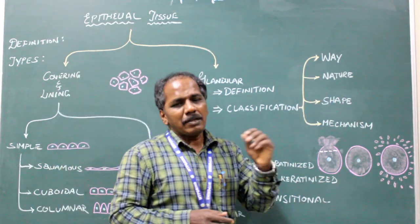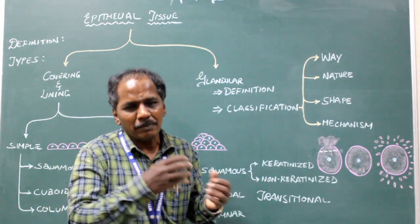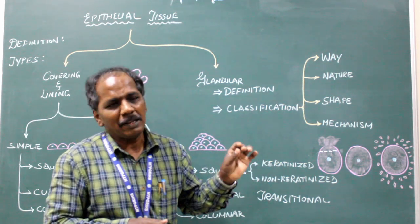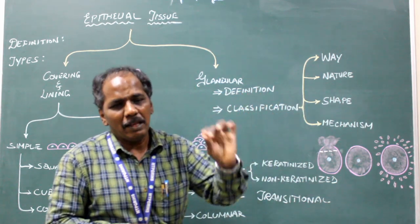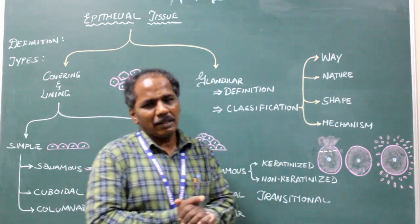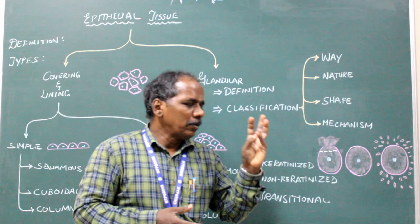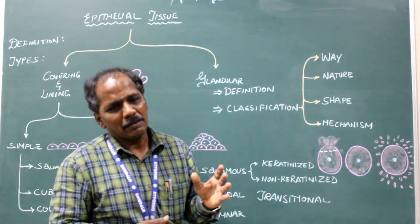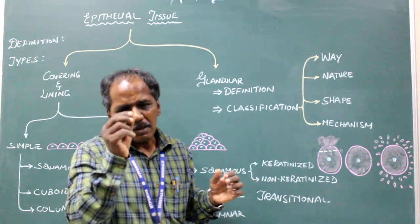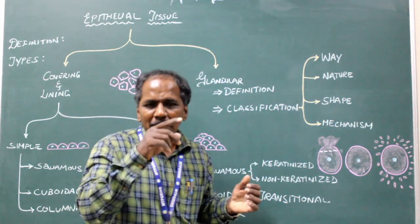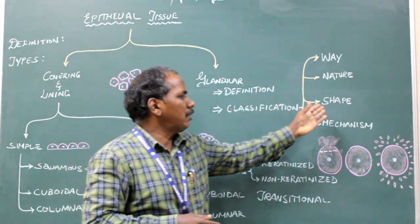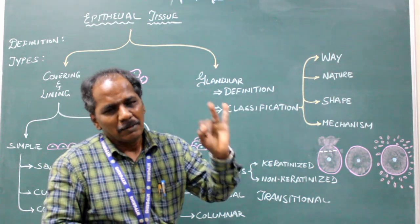Depending upon the nature of secretion: all glands secrete some juice, enzymes, or hormones. If the secretion is thin or watery, it is the serous type; if it is thick, it is the mucus type. Depending upon the shape of the secretory cells, glands are divided into tubular, alveolar, and acinar. Tubular glands have tubular structures; alveolar glands contain round cells; and acinar glands contain flask-shaped cells.